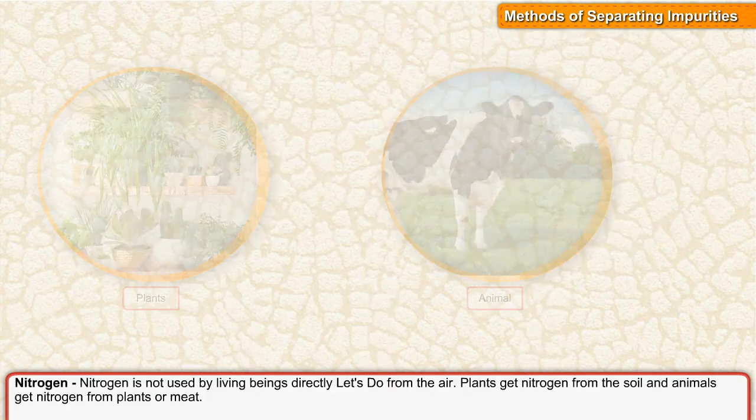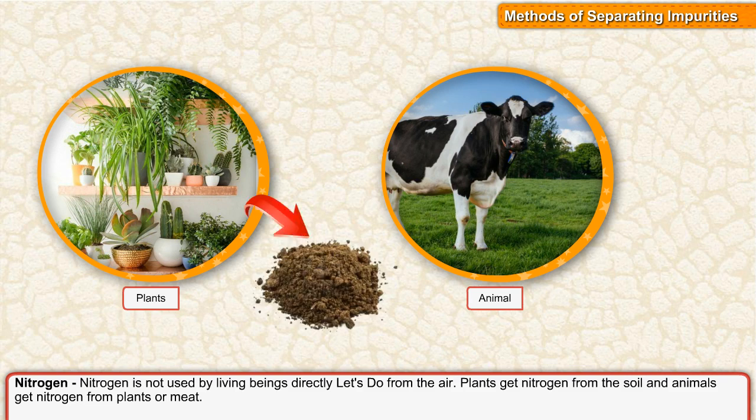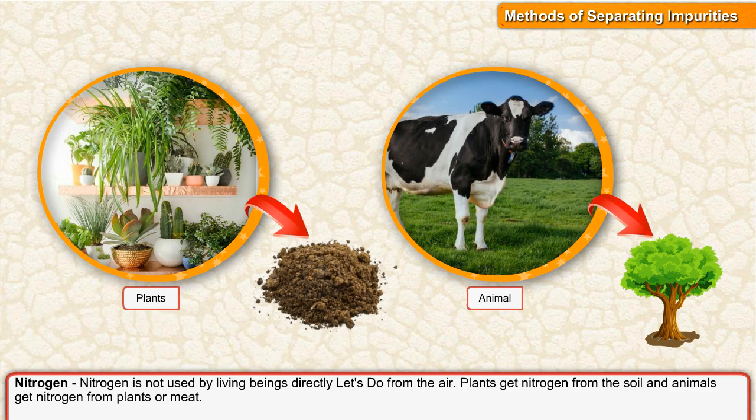Nitrogen is not used by living beings directly from the air. Plants get nitrogen from the soil, and animals get nitrogen from plants or meat.